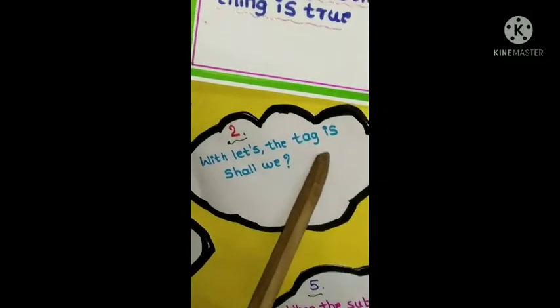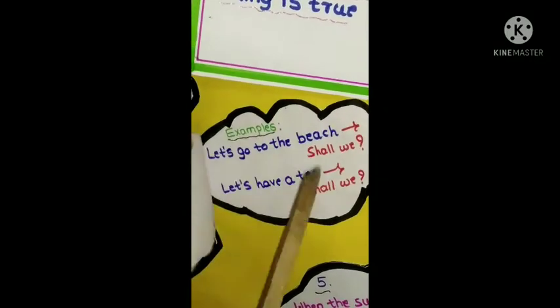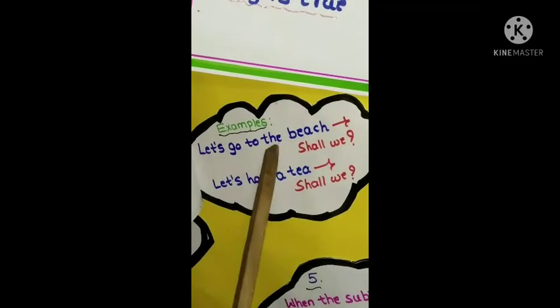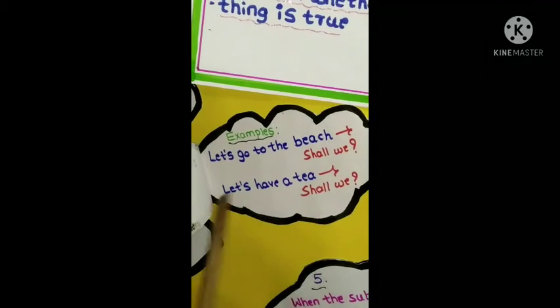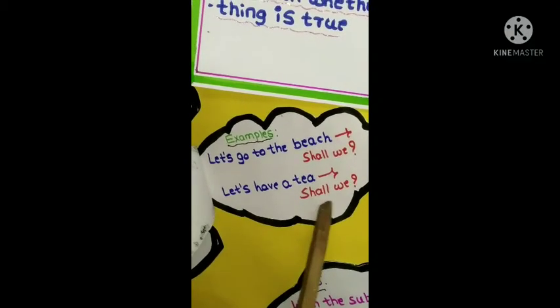With let's, the tag is shall we. Example: Let's go to the beach. We make question tag that is shall we. Let's have a tea. Shall we?